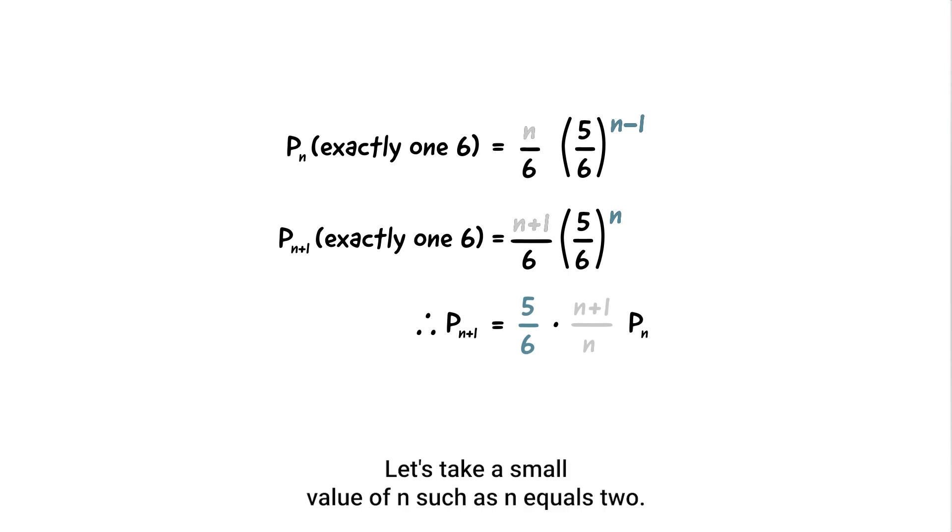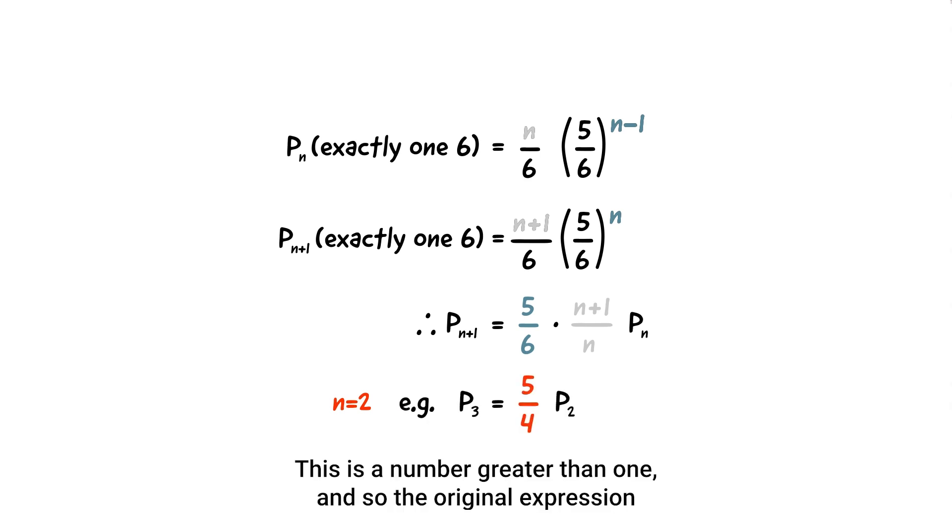Let's take a small value of n such as n equals two. Then the above factor is equal to five fourths. This is a number greater than one. And so the original expression is still increasing from n equals two to n equals three because we're multiplying by something greater than one.